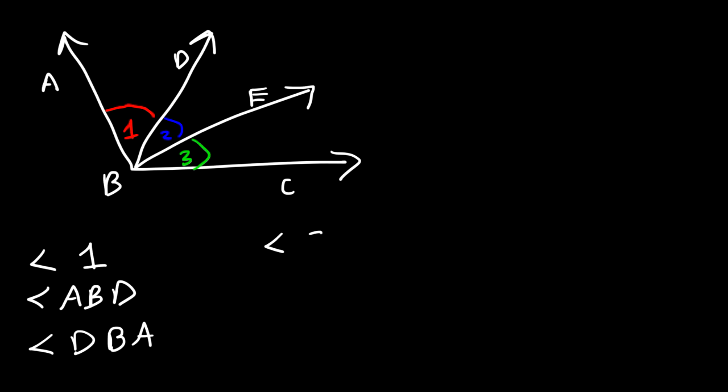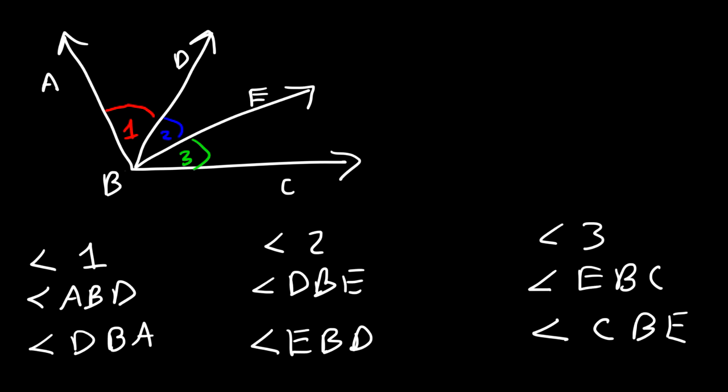Now what about angle two? What are two different ways to name angle two and also angle three? So angle two, you can call it DBE. You could also call it angle EBD. You can name it in reverse. And the process is going to be the same for angle three. So angle three can be called angle EBC. Or you can call it angle CBE. So notice that the vertex, letter B, has to be in the middle of each of these angles. Because B is the vertex for angle one, two, and three. So now you know how to name angles.